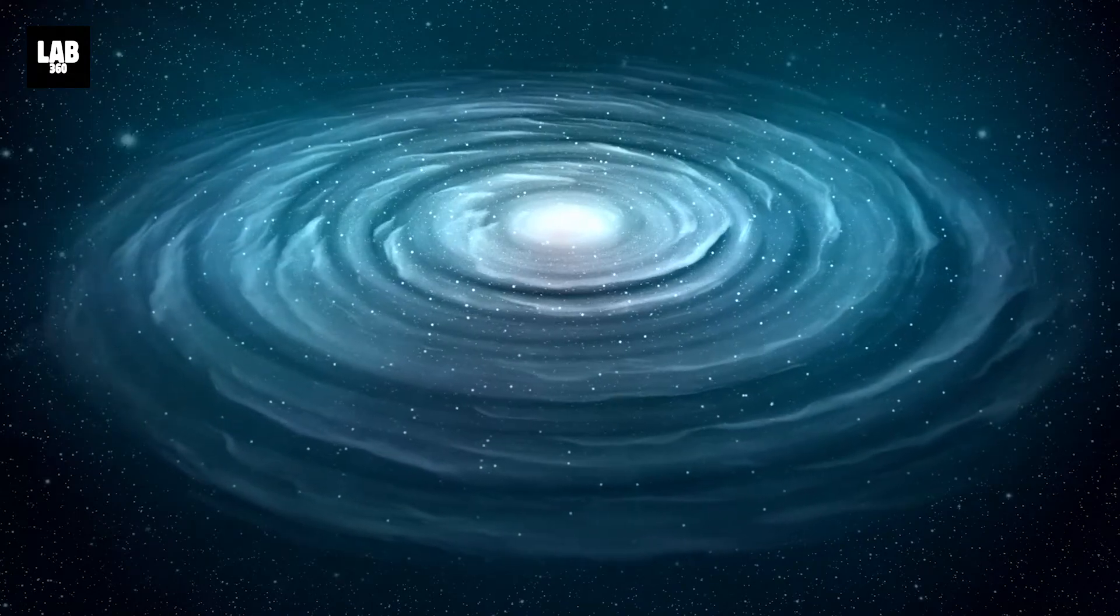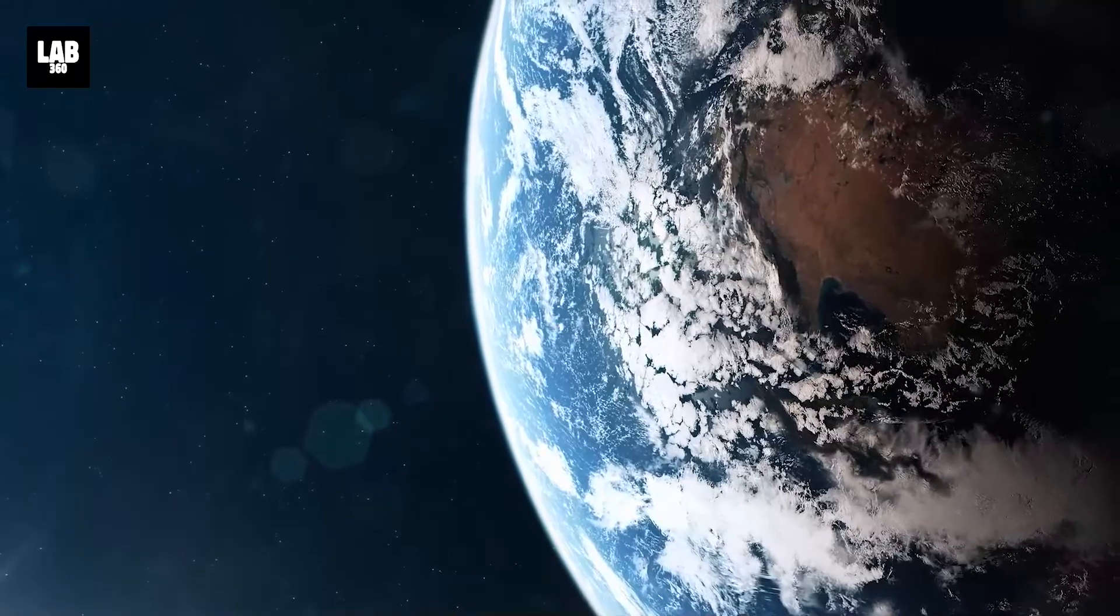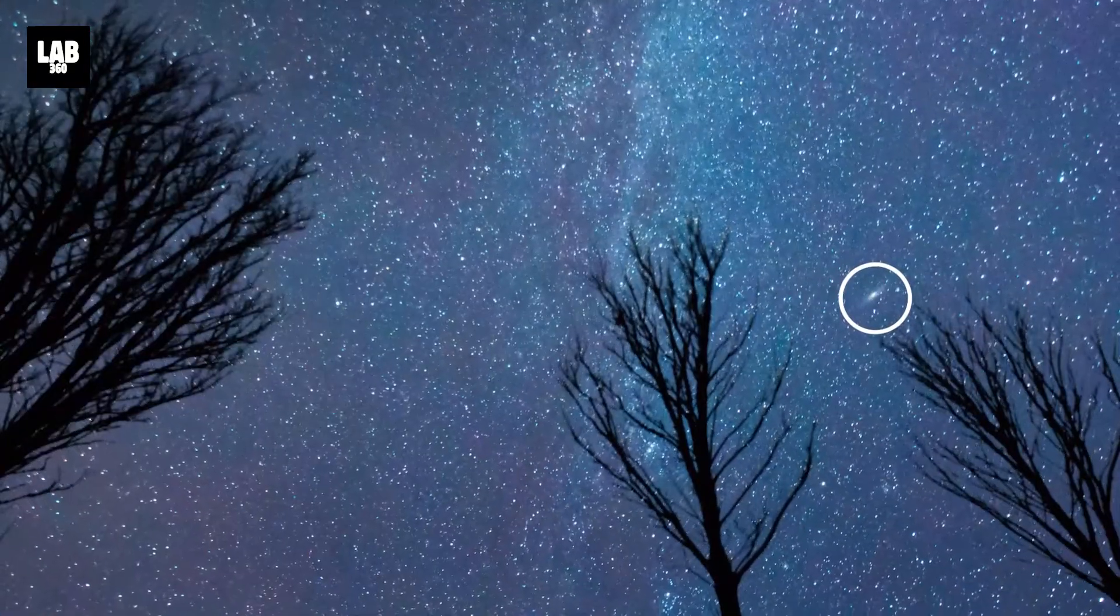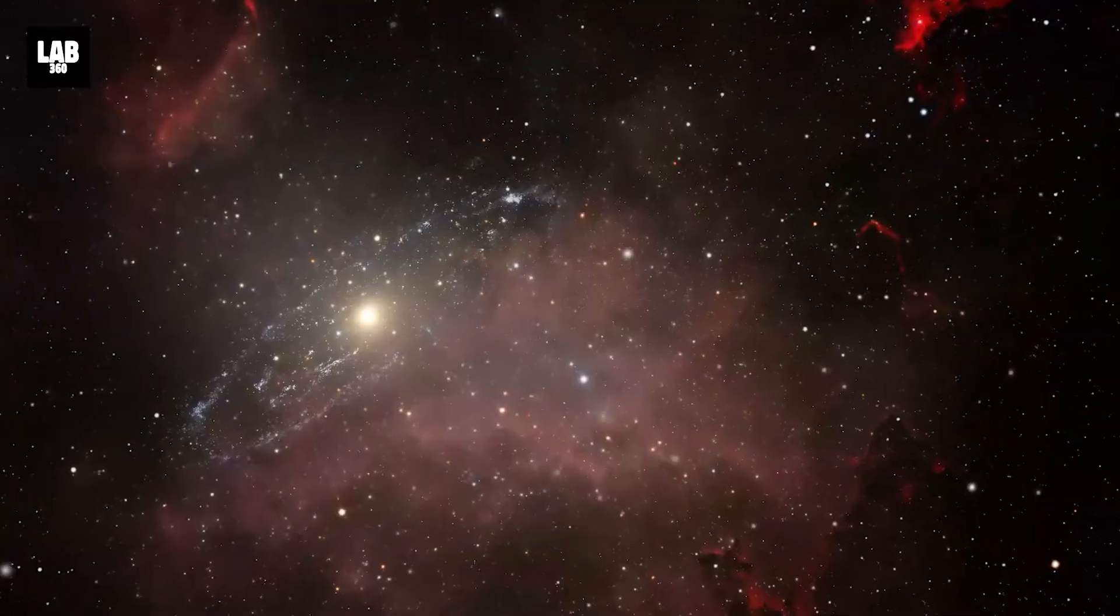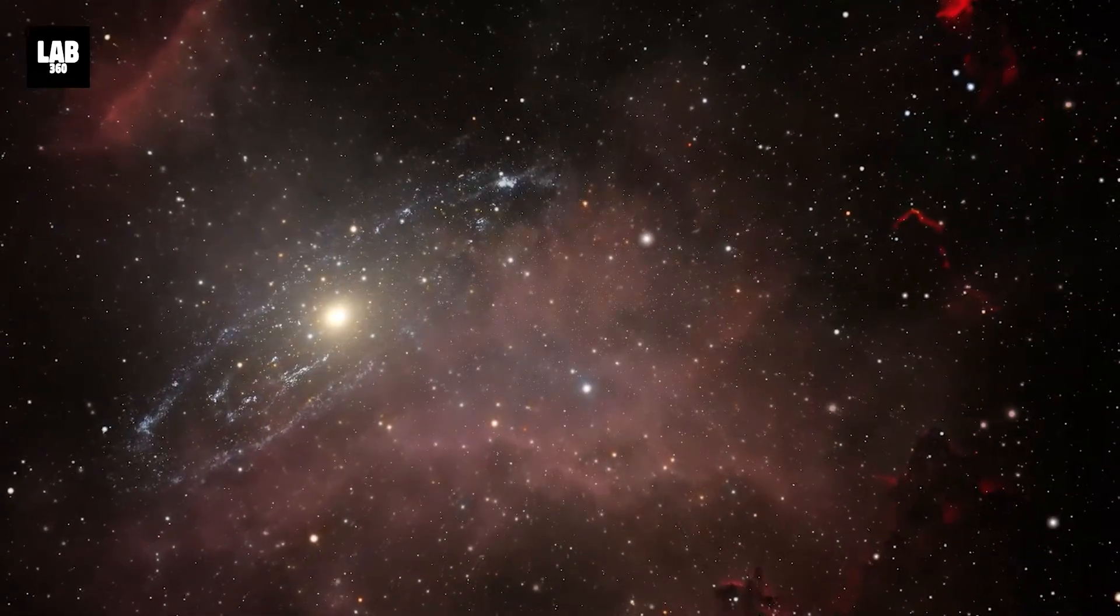Andromeda is the nearest major galaxy to the Milky Way and is about 2.5 million light-years away from us. Andromeda is also the most distant thing you can see with the naked eye. It is the largest galaxy in the local group in terms of span or diameter.